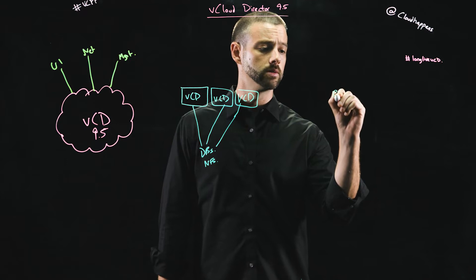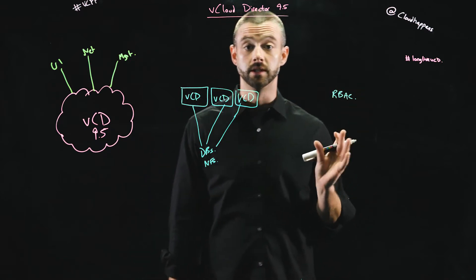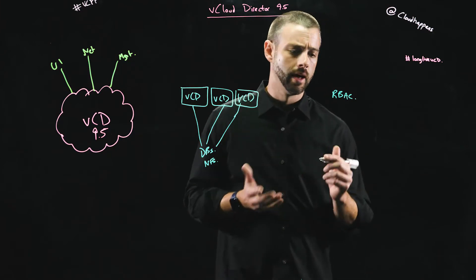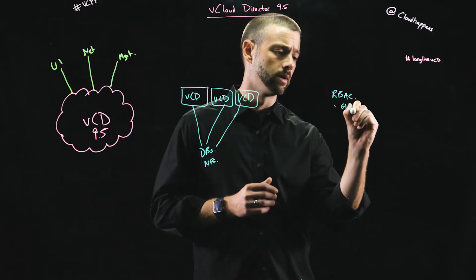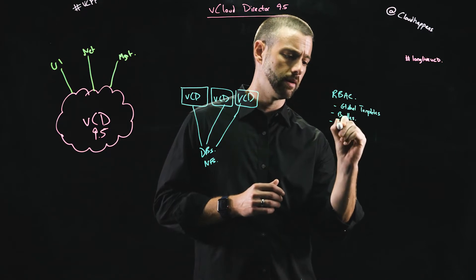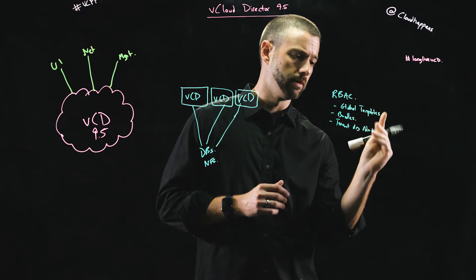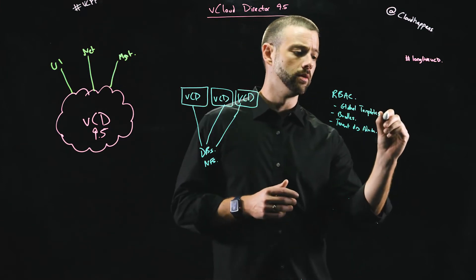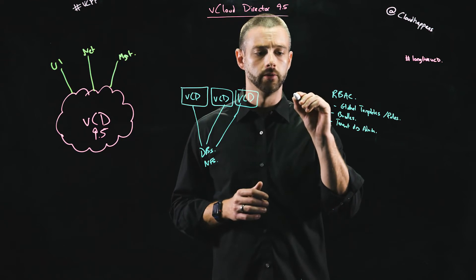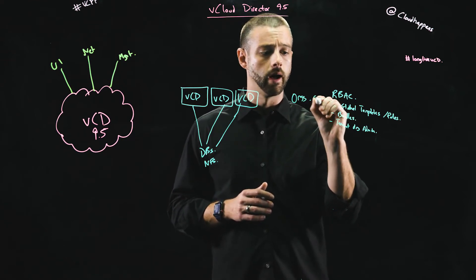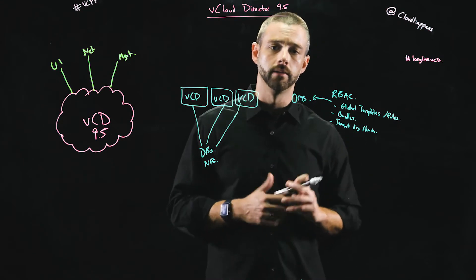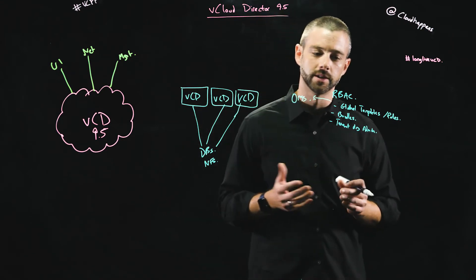Next up is role-based access control. The team has done a great job of simplifying our RBAC capabilities, taking some of the challenges out of assigning permissions, and this is done through using global templates. We also have this concept of bundles now, and the tenant org admin capability. With global templates, or global roles, we can essentially create a role that not only applies to a certain organization, but can actually propagate to many orgs within the environment. So you could create a specific role with certain vApp permissions and propagate it out to multiple orgs, providing a lot of flexibility.